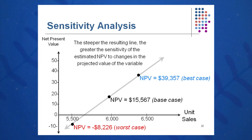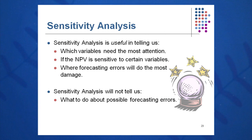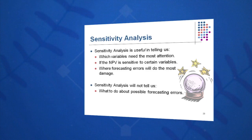In sensitivity analysis, you hold everything constant except one variable. Sensitivity analysis will tell us which variables need a lot of attention — most times it's sales volume, which is the one you'll vary most often while keeping the others constant. However, even if the NPV is sensitive to certain variables like sales volume, it will not tell you whether or not to take the project.